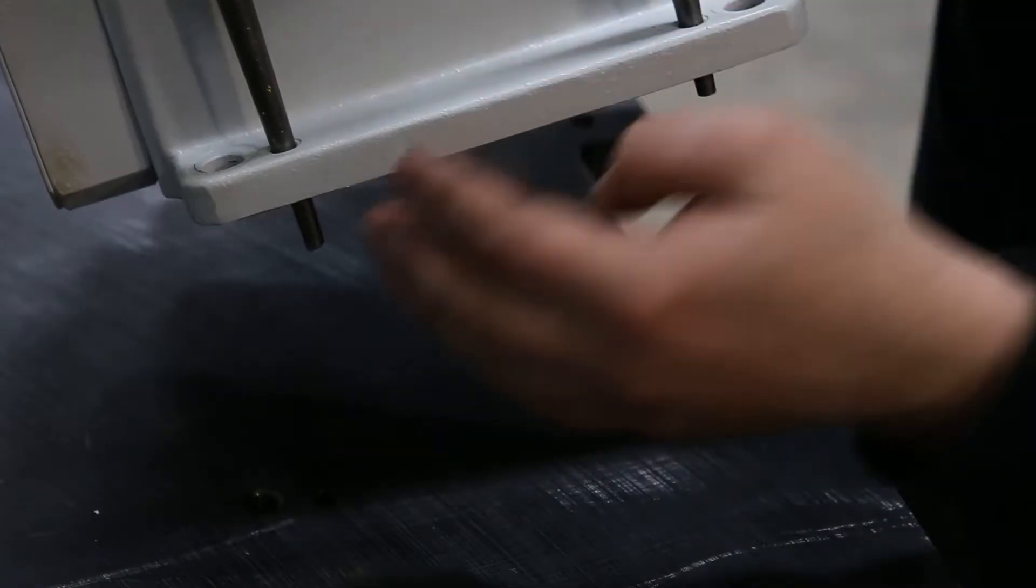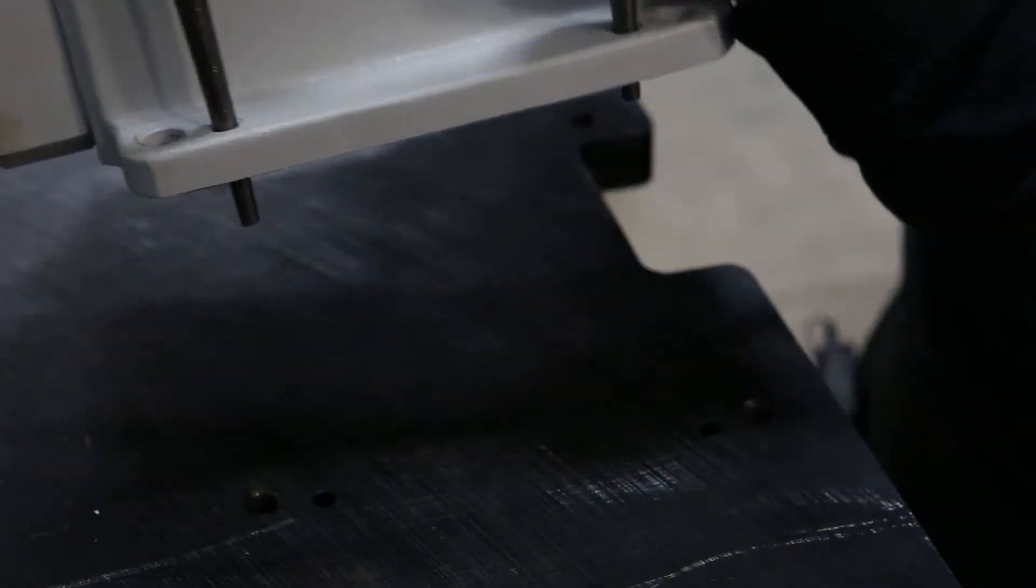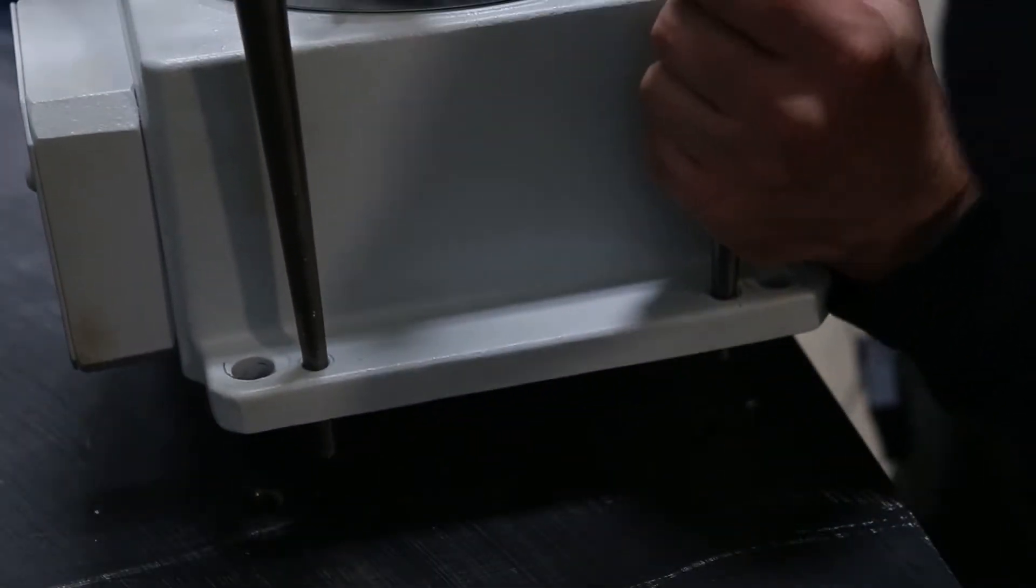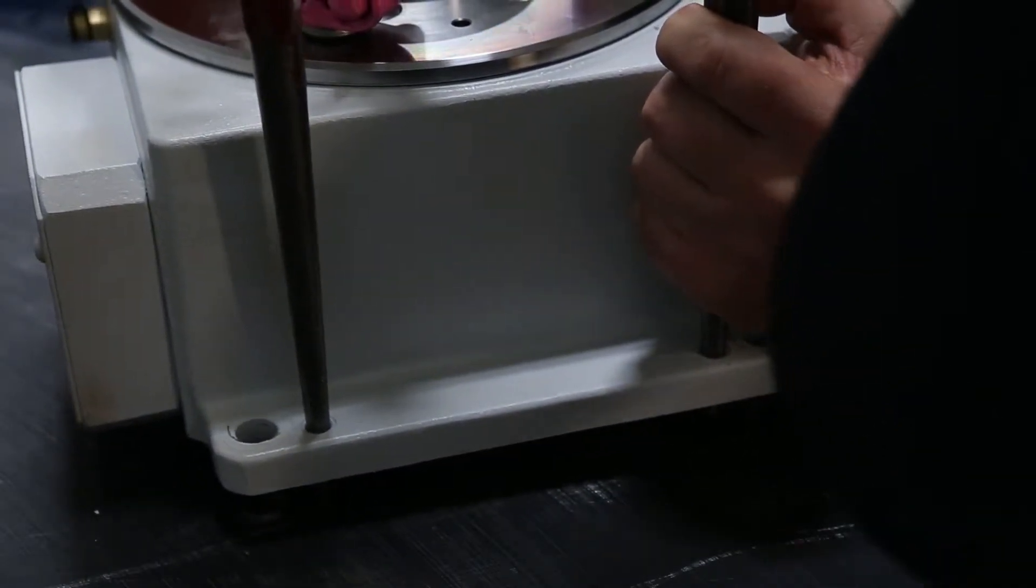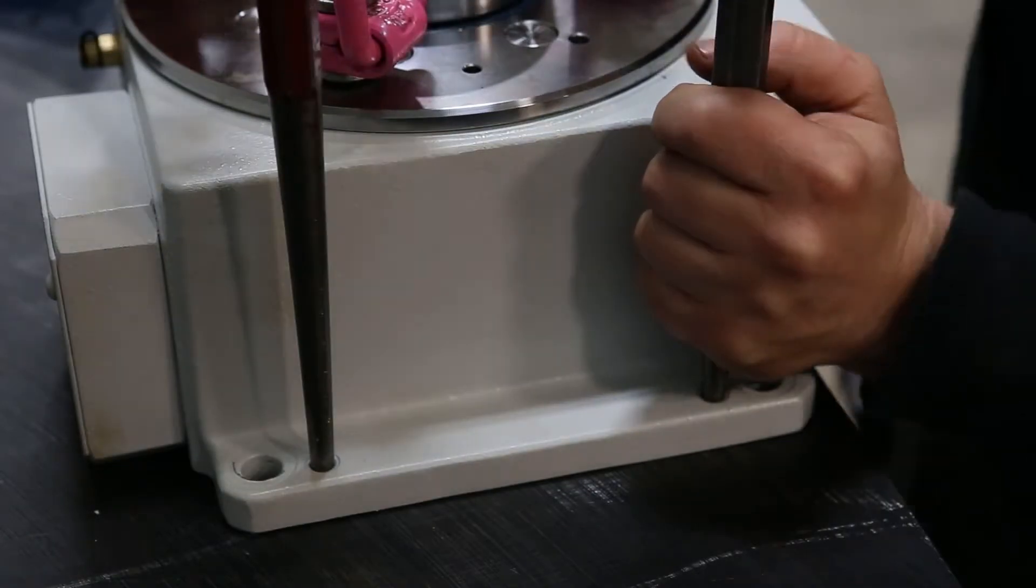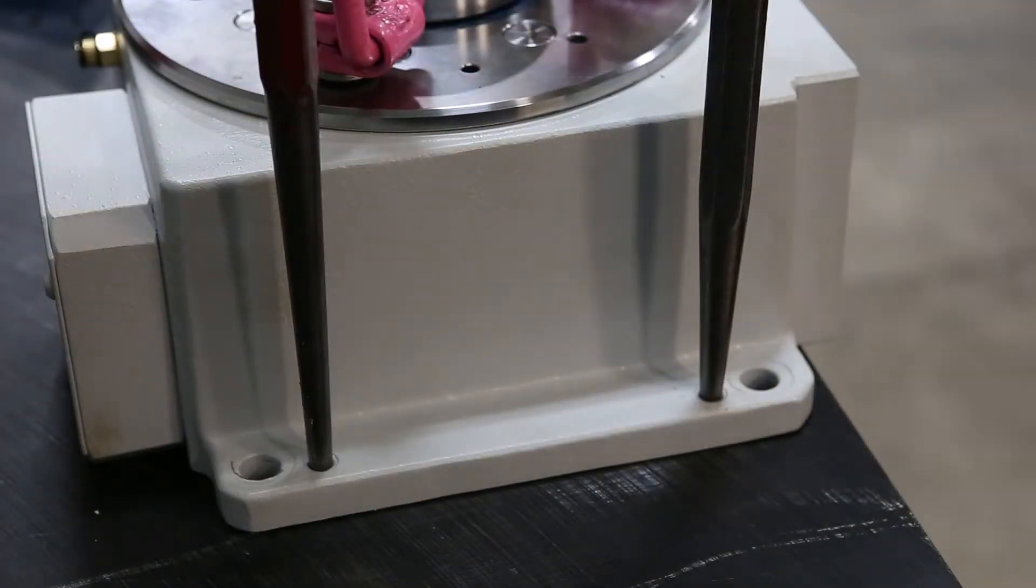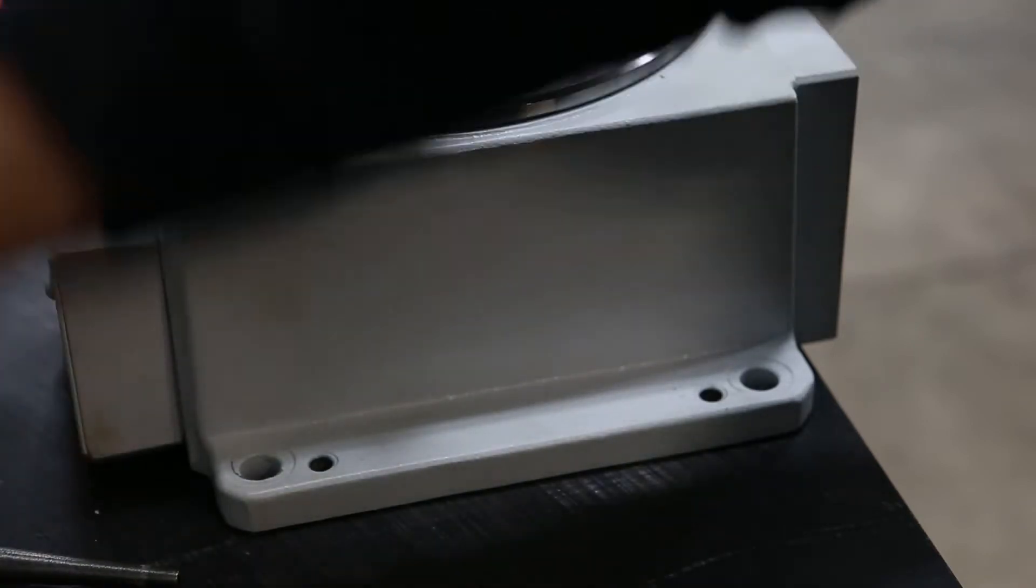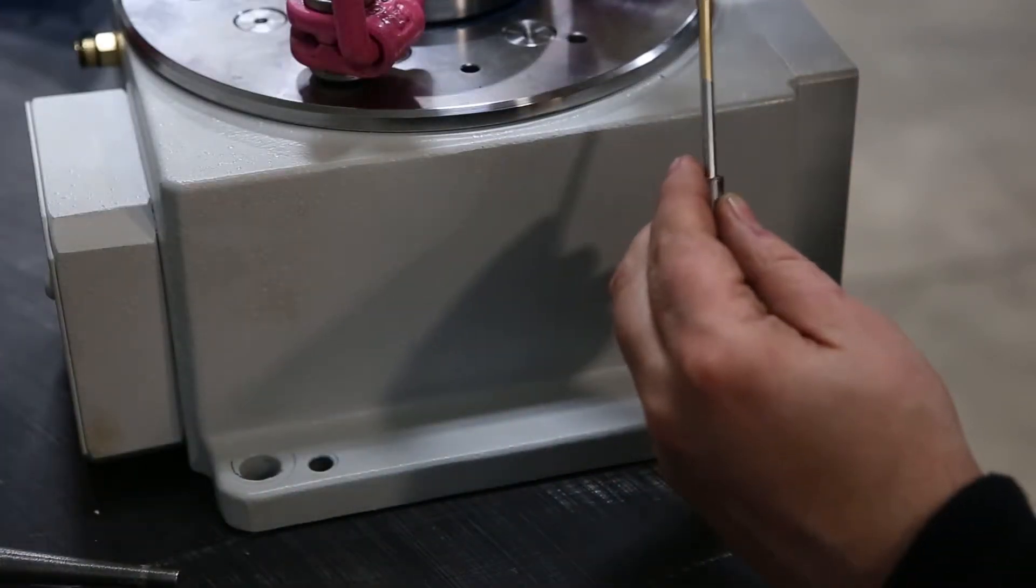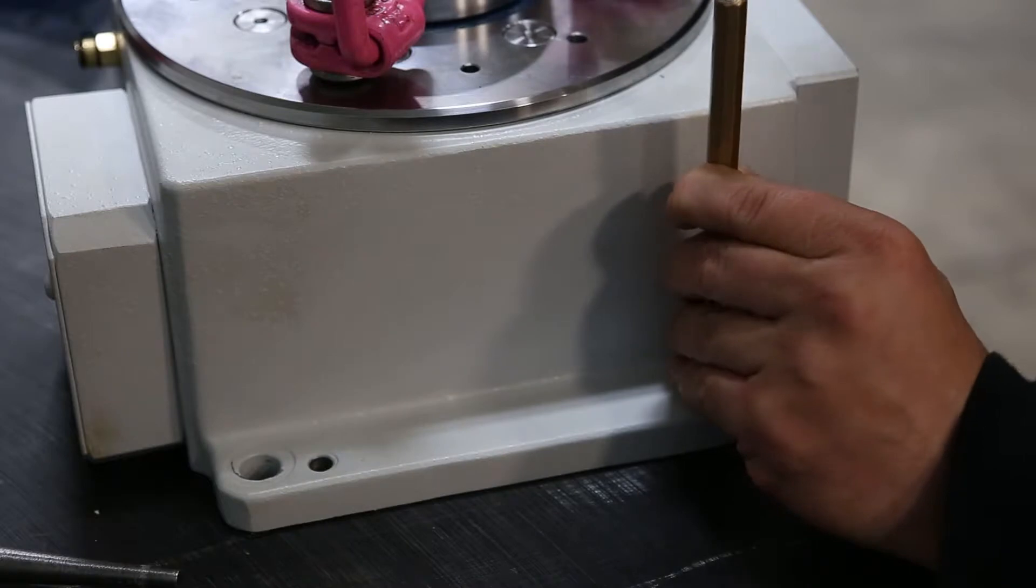I used two tapered locating rods to lower it into the pin holes. You can remove your locating rods and install your two parallel dowel pins one-third of the way.